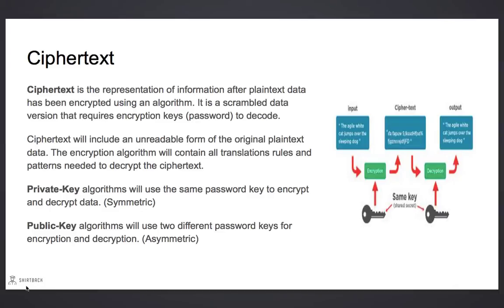Decryption translates scrambled ciphertext back into its original plain text form for viewing and modification. Ciphertext is the representation of data after plain text data has been encrypted using an algorithm. It is a scrambled data version that will require an encryption key to decode. Ciphertext includes an unreadable form of the original plain text data, and the encryption algorithm will contain all the translation rules and patterns needed to decrypt the ciphertext.